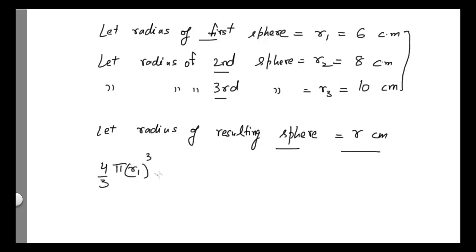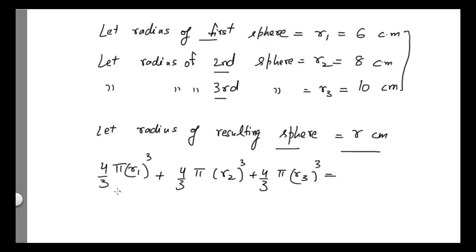The volume of the second sphere equals 4/3 π r2³, and the volume of the third sphere equals 4/3 π r3³. The sum of all these volumes equals the volume of the resulting sphere: 4/3 π r³.